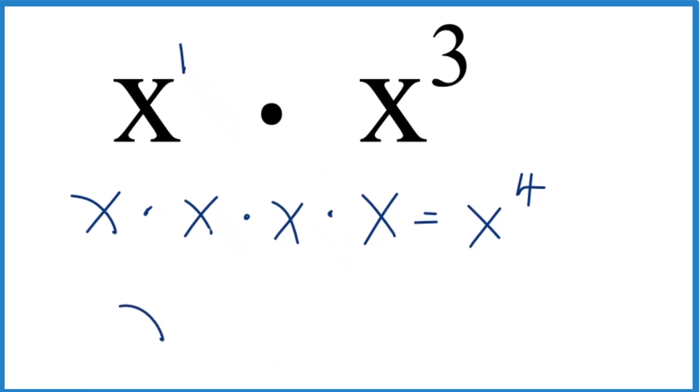And we could say x to the one times x to the third. And then since we have x here and here, it's the same. We just add these exponents together. So x to the one plus three, that equals x to the fourth.